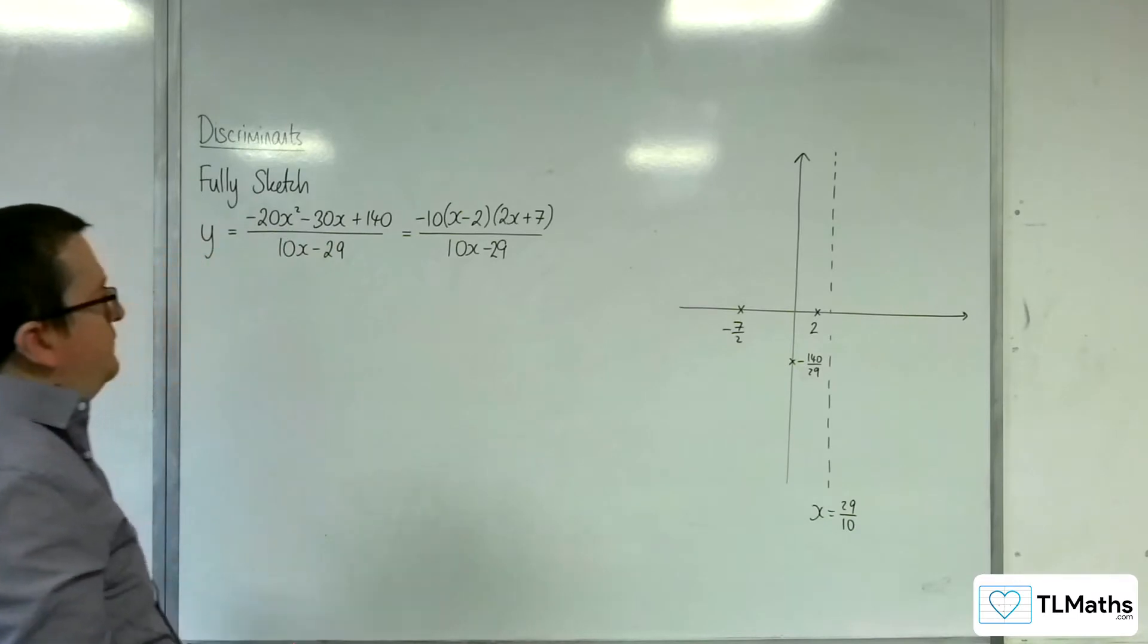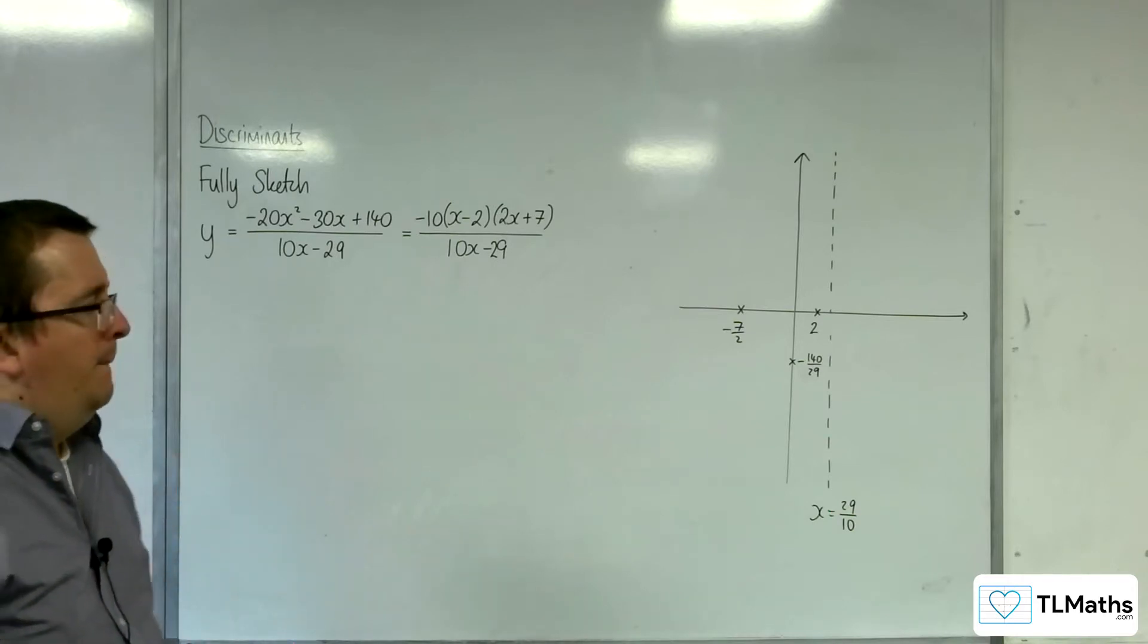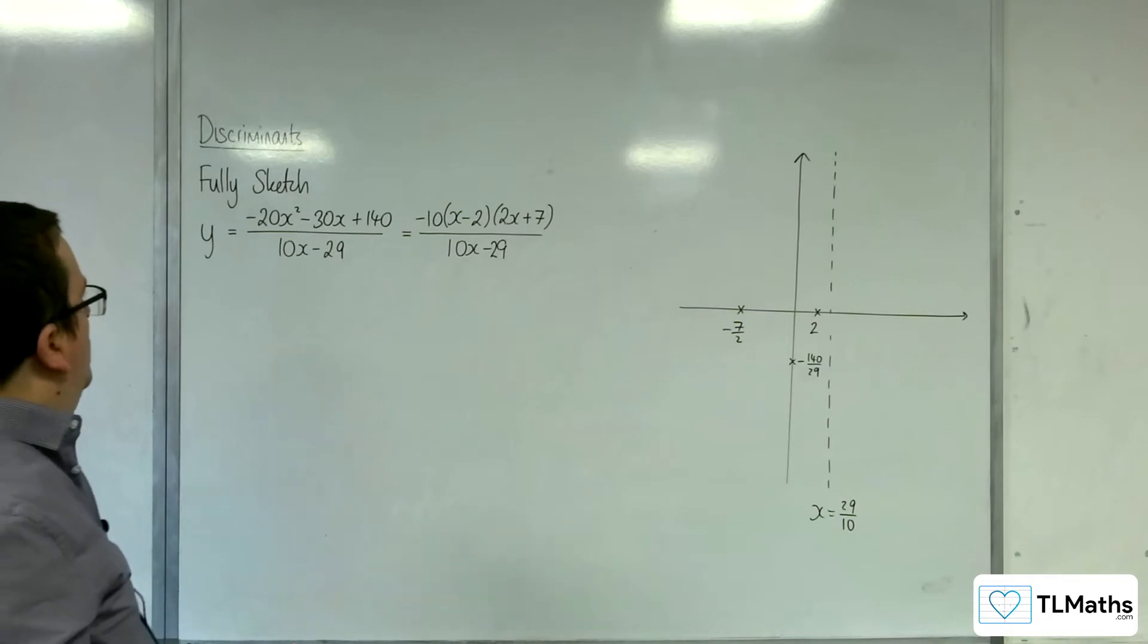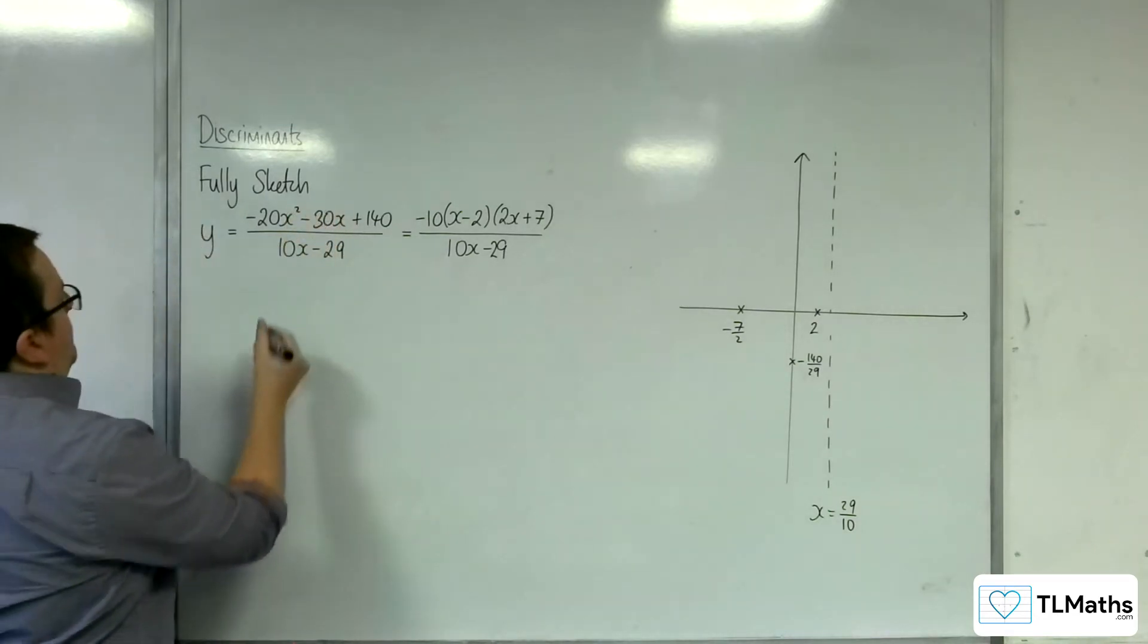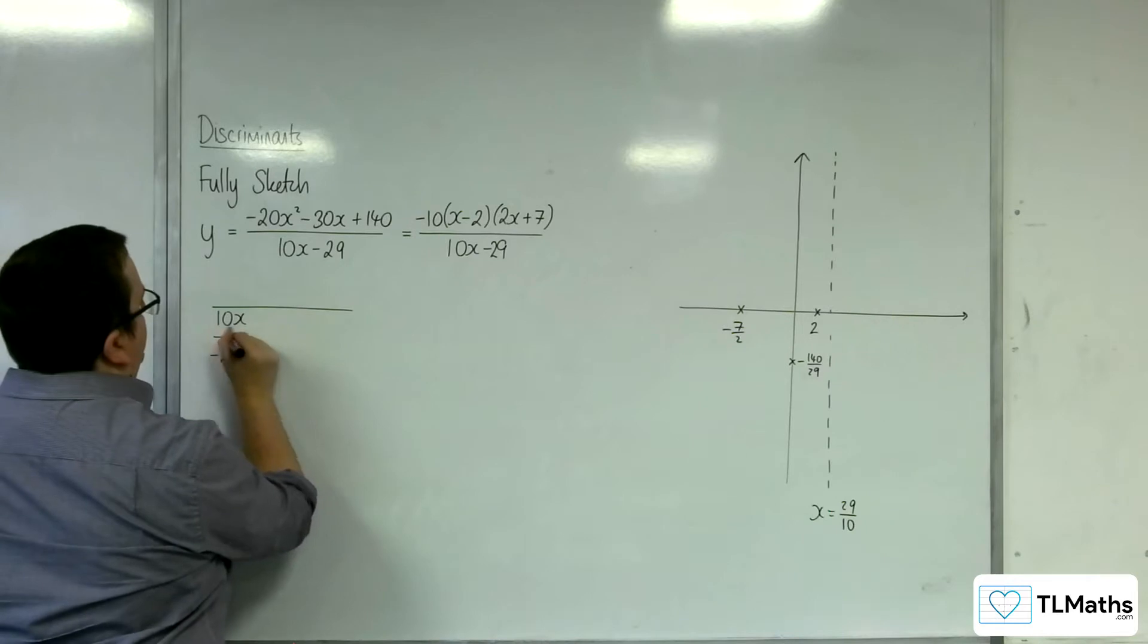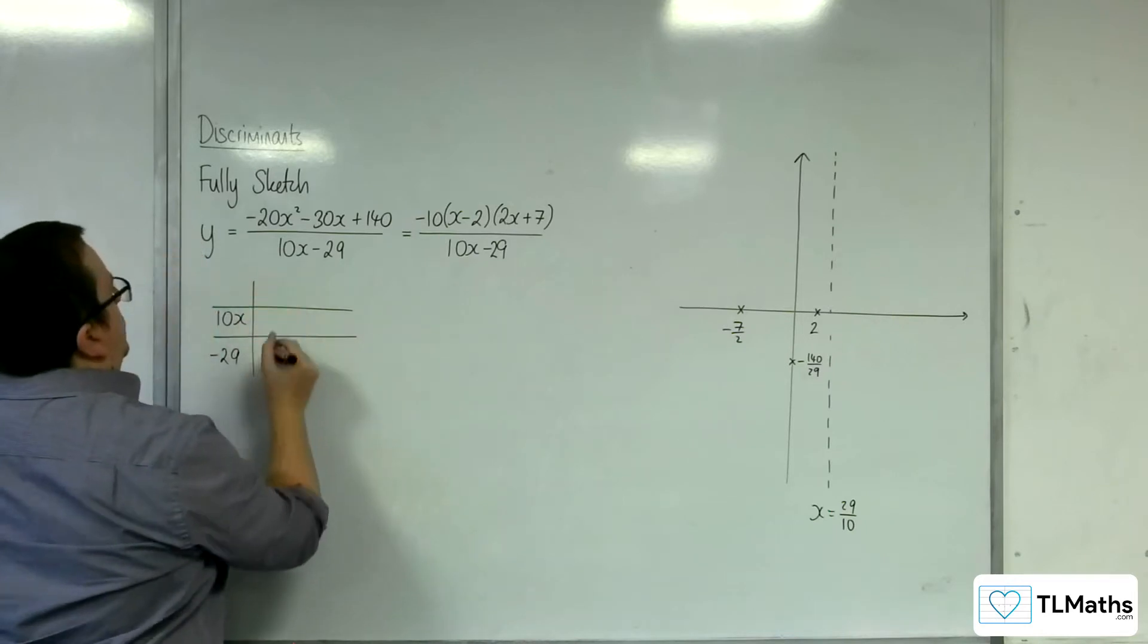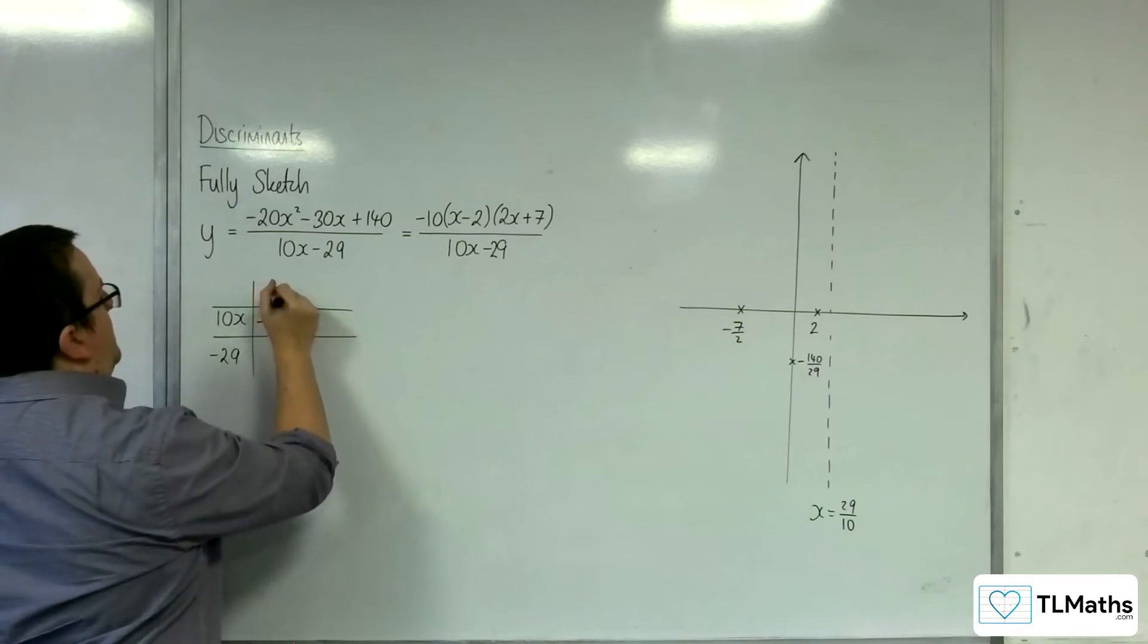Next up, let's go for an oblique asymptote. I'm going to need to divide the numerator by the denominator. So, 10x and minus 29. We need minus 20x squared. So, that will have to be minus 2x.